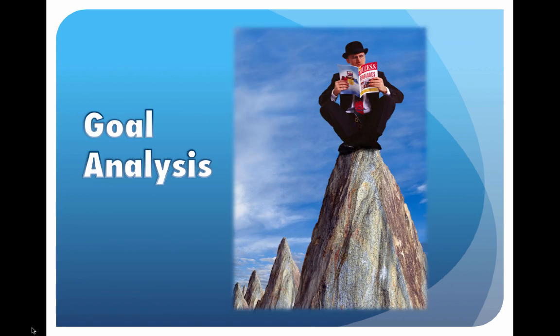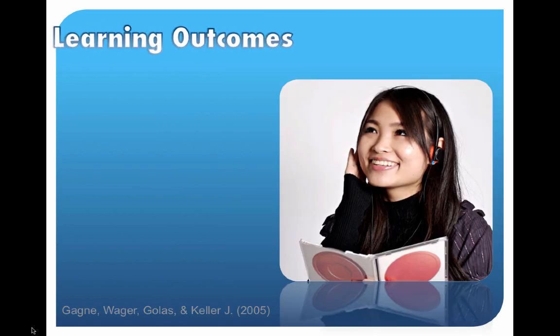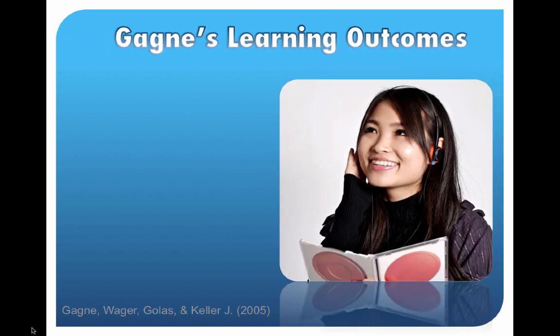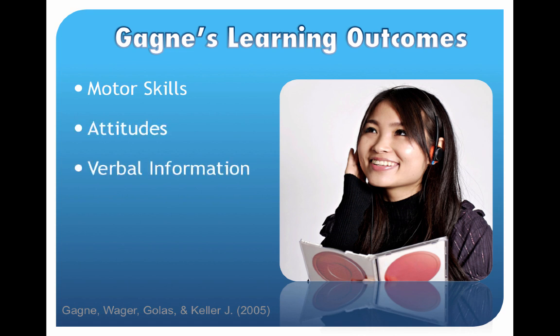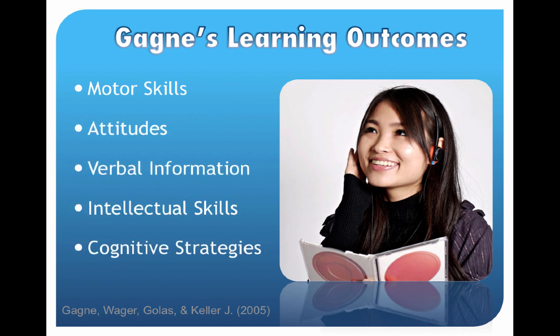Goal Analysis is our first step. It's important to look at Gagné's learning outcomes to be able to do this well — you might remember that from the last part of the series. We have motor skills, attitudes, verbal information, intellectual skills, and cognitive strategies. We will look at ways to analyze each of these learning outcomes.